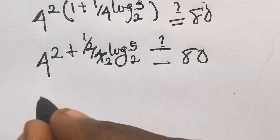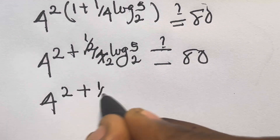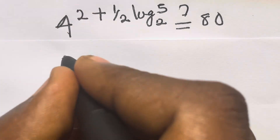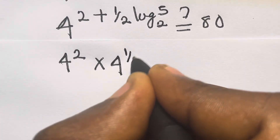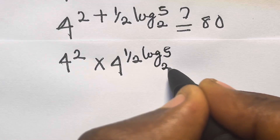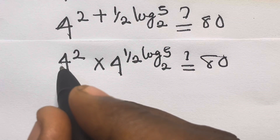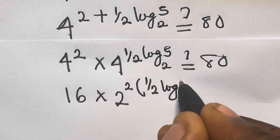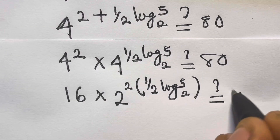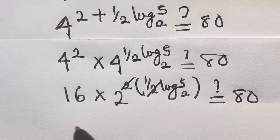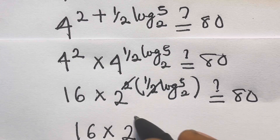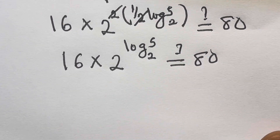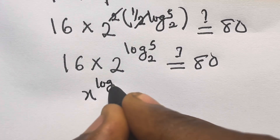Expanding: 4^2 times 4^((1/2)·log₂5) equals 80. That gives 16 times 2^(log₂5) equals 80. We recall that x^(log_x(y)) equals y, so 2^(log₂5) equals 5, giving us 16 × 5 equals 80. This confirms our answer.